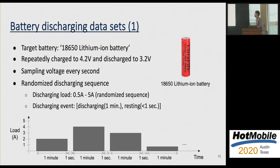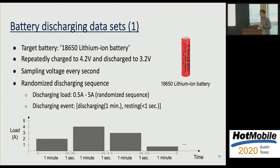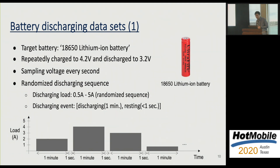The dataset consists of eight lithium-ion batteries continuously operated for 11 months. These batteries were repeatedly charged to 4.2V and discharged to 3.2V using a randomized sequence of discharging currents between 0.5A and 5A. Two customized probability distributions — called high-skewed and low-skewed — were used to select the discharge load. Each discharging event consists of a one-minute discharging period followed by a one-second rest, during which a new discharge load is selected for the next event.